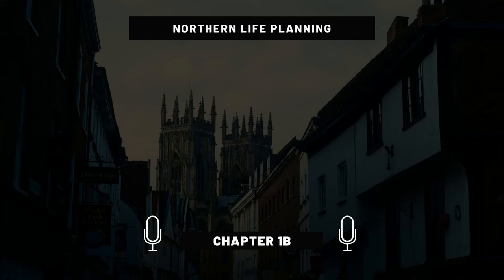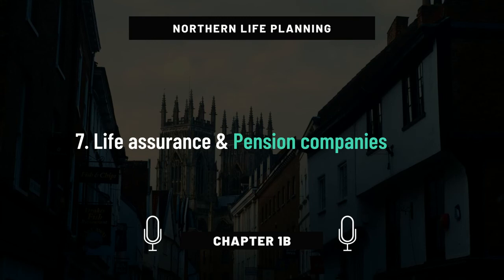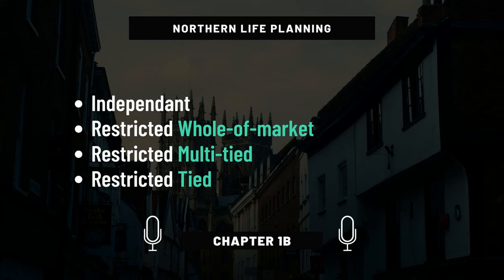Now pay attention here. Remember financial institution number seven — life assurance and pensions. Their offerings fall under one of four categories. The first is independent: the firm will scan the entire retail market for the type of products you're after, from all issuers, and present the most relevant selection. The second is restricted whole of market: usually a subsidiary that can advise on investments from any provider in the market. The third is restricted multi-tied financial advice: a subsidiary that can advise on a limited range of providers. The fourth and last is restricted tied financial advice: a subsidiary that can only advise on products from one single provider — usually their own.